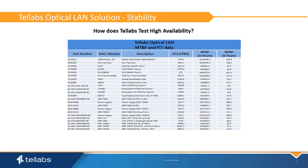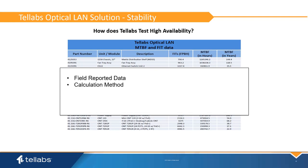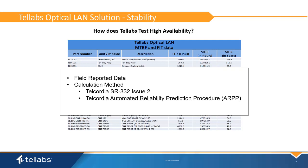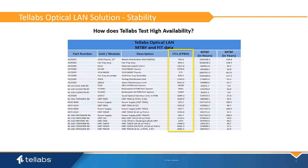How does Telab's test high availability? Optical LAN system availability is typically determined with prediction calculations and actual field performance. Telab's optical LAN system reliability is determined using two methods: field-reported data and a calculation method. Telab's tracks this information through our customer service group, and customer system performance is tracked and reported annually. For the calculation method, Telab's follows the procedure defined by the industry standard Telcordia SR332 Issue 2 standard. Failures in time rates are calculated for each assembly to determine steady-state failure scenarios, using Telcordia automated reliability prediction procedure software and Telcordia interactive Markov analysis program software. Final results are provided in failure in time, failure per billion hours, and mean time between failures.